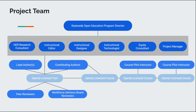Connected to the openly licensed text are lines leading to the author team — usually one or two lead authors and two to seven contributing authors. Each text is reviewed by peers at the outline and manuscript stage, and a workforce advisory board also reviews the outline as well as pedagogical elements later on in the process. Course pilot instructors implement the OER in their courses and share back feedback about the text for the revision phase.